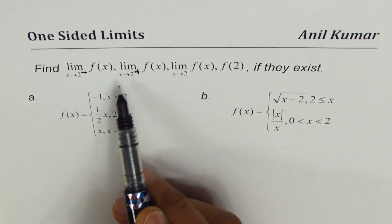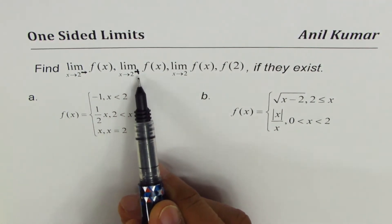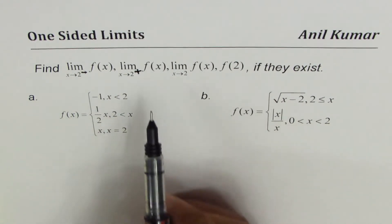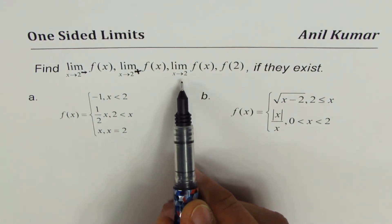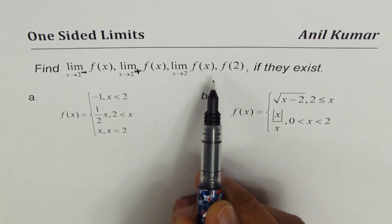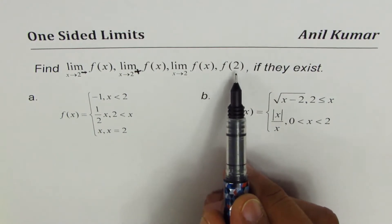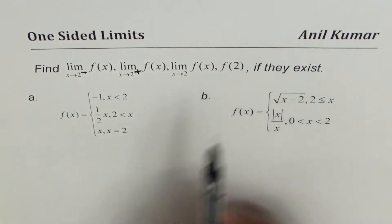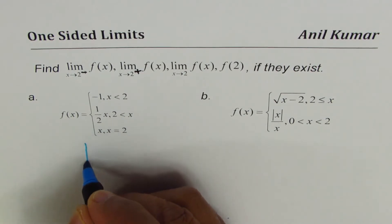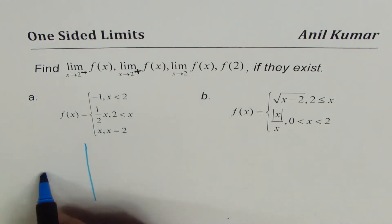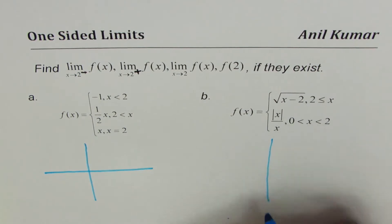We also need to find the limit when x approaches 2 for f(x), and the value of the function at 2, that is f(2), if they exist. These are two examples for you — you can pause the video, answer the questions, and then look into my solution. Now what I'll do is sketch the graph — that's the best way to approach this.